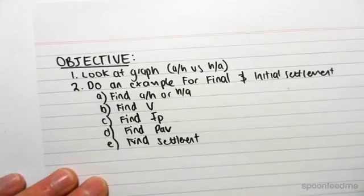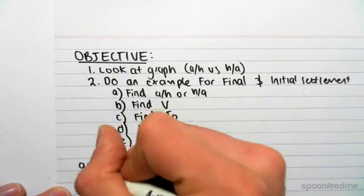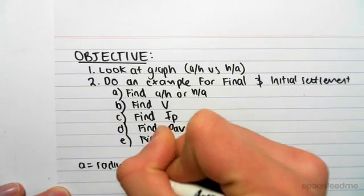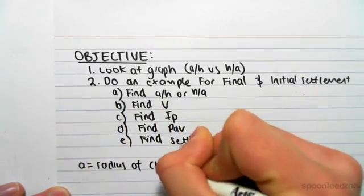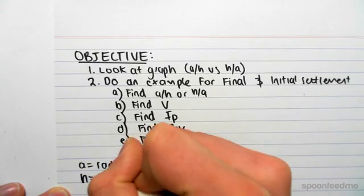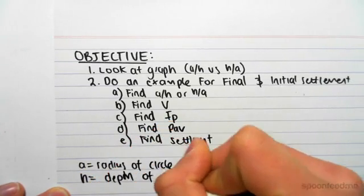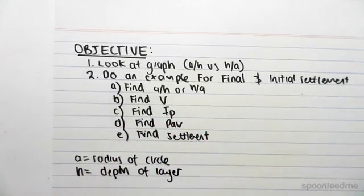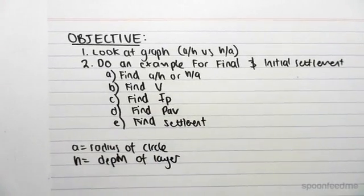But all it is is a is equal to the radius of our circle, and h is equal to the depth of the layer—so it's the layer depth.